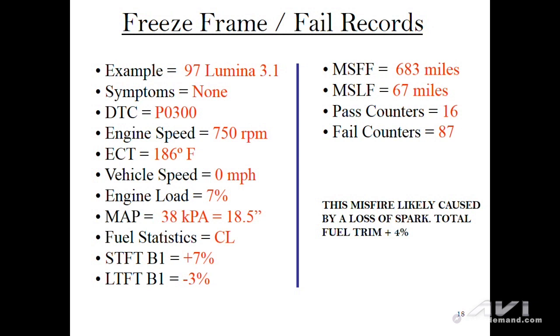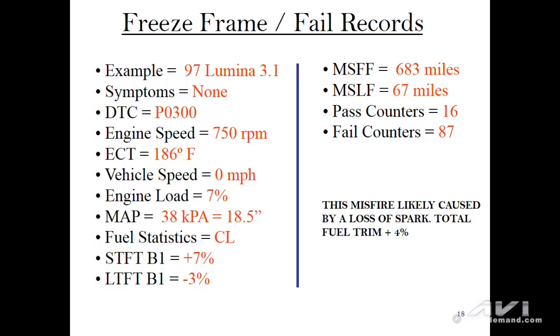The PCM caught a P0300 at idle — 750 RPM, engine temperature 186 degrees Fahrenheit. The vehicle is in park. Focus on the short-term and long-term fuel trim. You can see the short-term fuel trim is only adding seven percent, while the long-term fuel trim is taking away three percent. When you combine both together you get the total fuel trim — in this case only a four percent correction. That tells us the misfire is likely caused by a loss of spark: bad coil, bad plug, or bad wire.